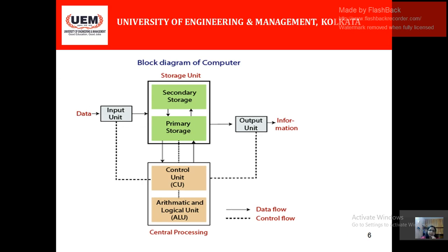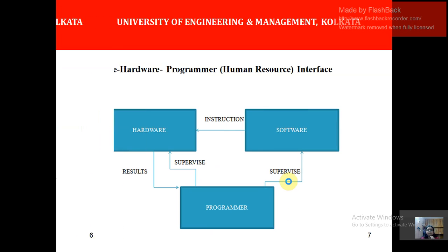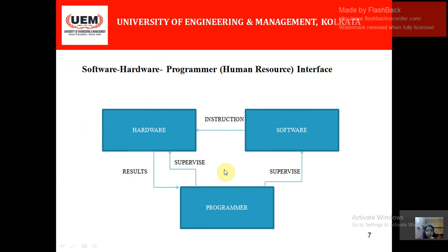This is the block diagram of a computer, which consists of input, output, the central processing unit, and storage. Within storage you have primary storage and secondary storage. Within the central processing unit you have the ALU and control unit. The solid line defines the data flow and the dotted line defines the control flow, which is basically controlled by the central processing unit.